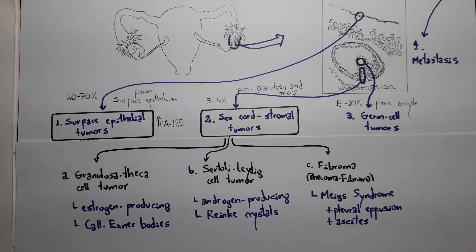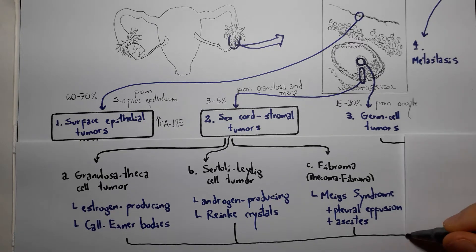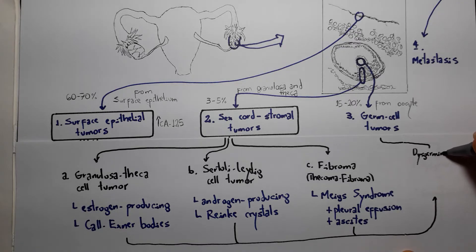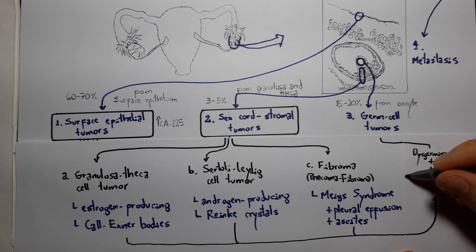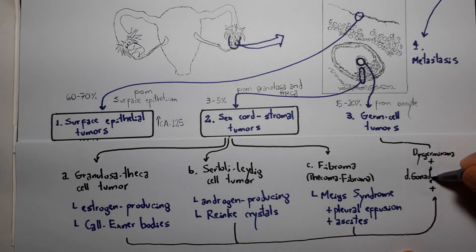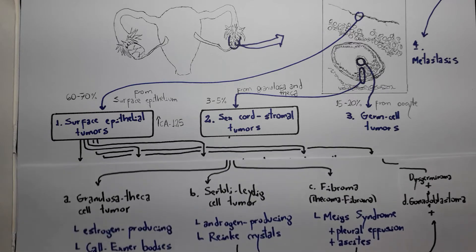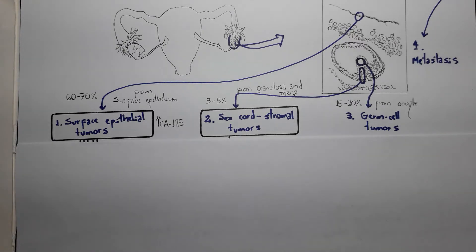Finally, we have a fourth tumor, gonadoblastoma, which combines characteristics from both sex cord stromal tumors and germ cell tumors. Since it has gonad in its name, it's representative of portions of at least two tissues. What actually happens is it's a combination between a dysgerminoma, a germ cell tumor, and another sex cord stromal tumor such as the ones we've seen, and it's malignant.